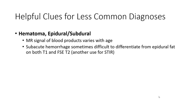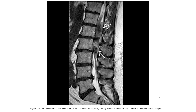Epidural hematoma: signal of blood products varies. With acute subarachnoid hemorrhage, it can sometimes be difficult to differentiate from epidural fat on both T1 and FSE T2. Sagittal T2WI shows an epidural hematoma from T12 to L3, indicated by the solid arrow, causing severe canal stenosis and compressing the conus and cauda equina.